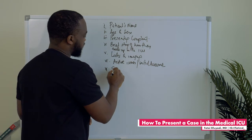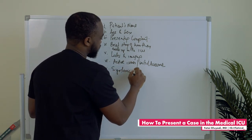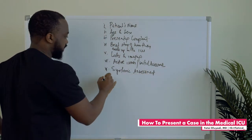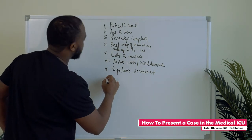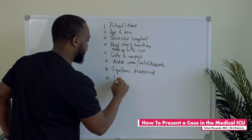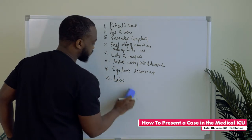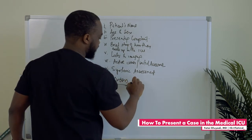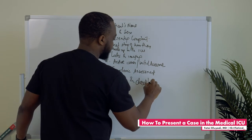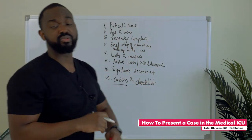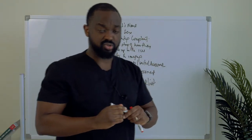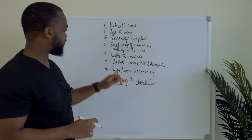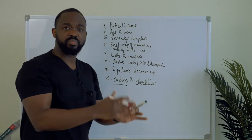Active issues, which may also include your initial assessment or the initial assessment of whoever admitted the patient. Then you will come to systemic assessment. And then finally, because you have to look at all the things you're doing for the patient, you talk about your orders — check your orders always — and then the checklist. The checklist will be a combination of orders you're supposed to always put and other things to make sure you're not missing anything important.